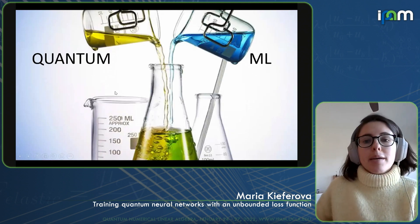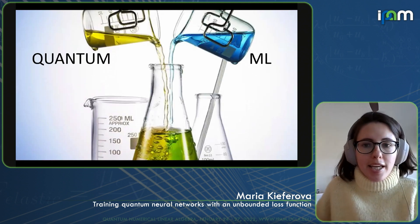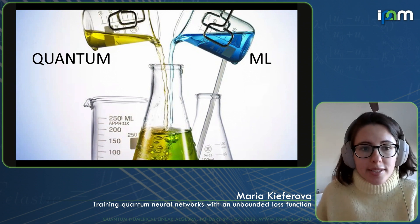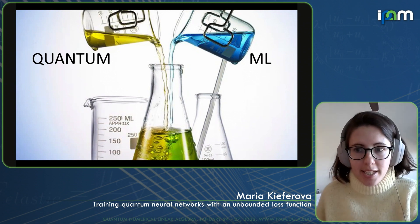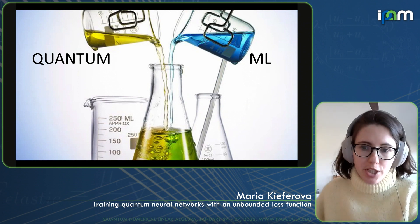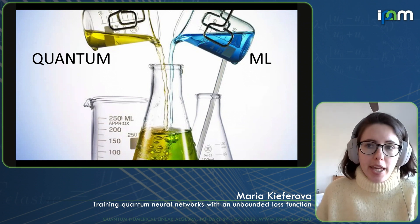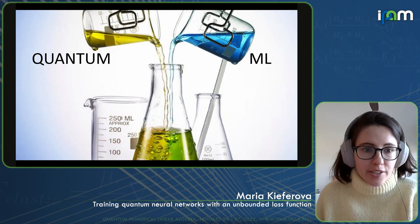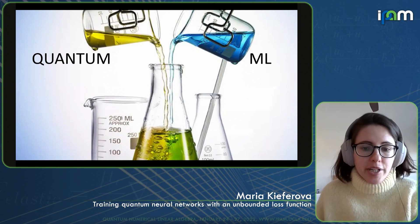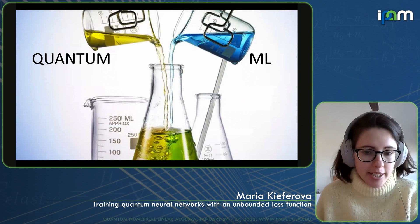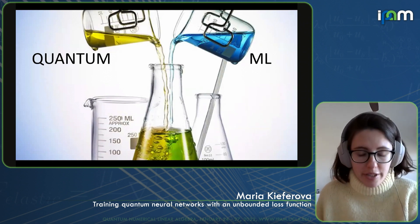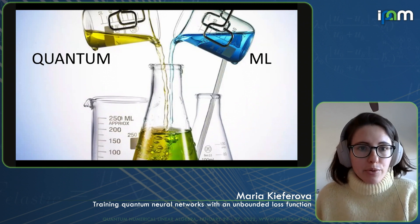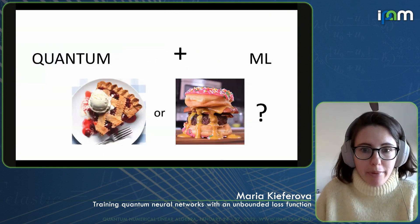When people talk about quantum machine learning, the story usually goes like this: we know that quantum is very powerful and can outperform traditional computation, and machine learning is having success in all spheres of life. So just putting these two very powerful concepts together must be even stronger than either of these parts — it's a no-brainer to take two very strong approaches and combine them.